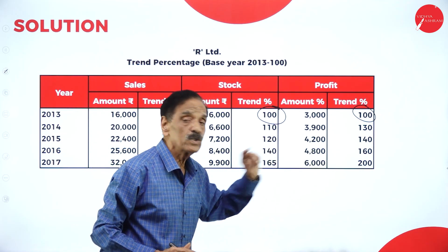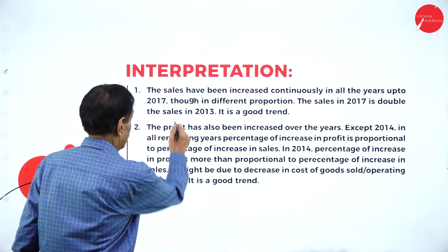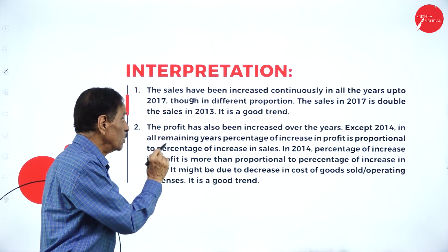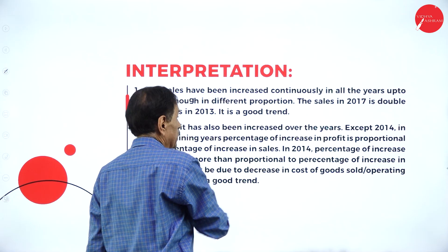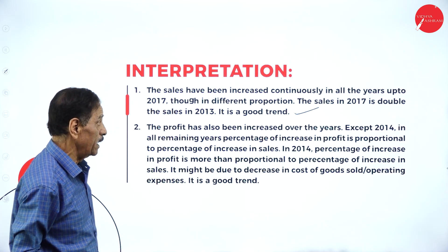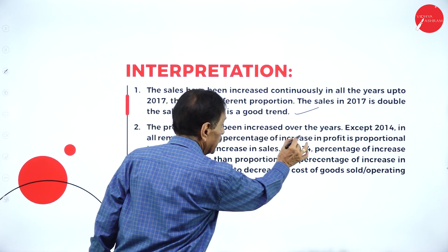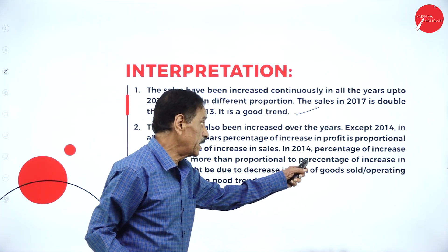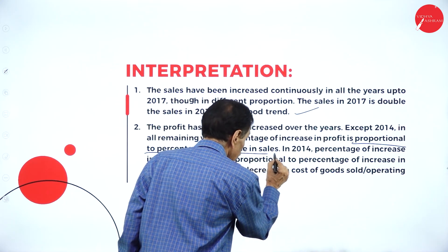Taking the base and seeing how much increase — the interpretation: sales have been increasing continuously in all the years up to 2007, though in different proportions. The sales in 2007 are double the sales of 2013, so it's a good trend. The profit has also been increasing over the years.